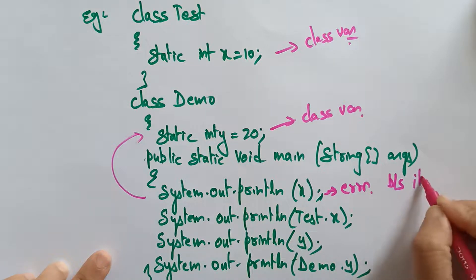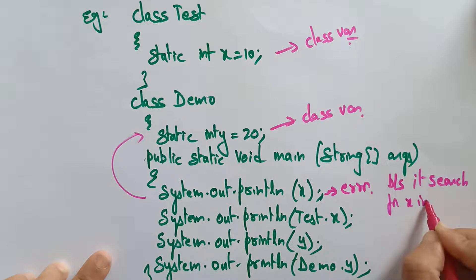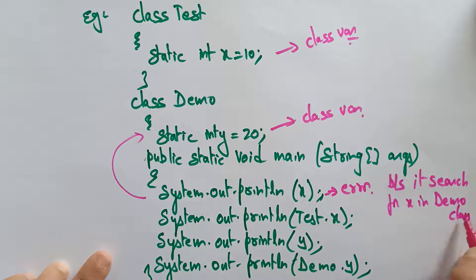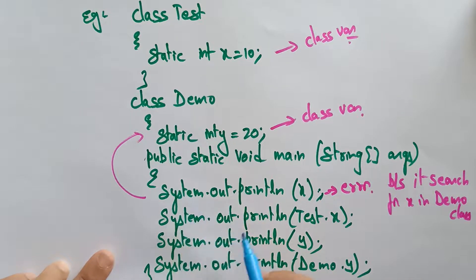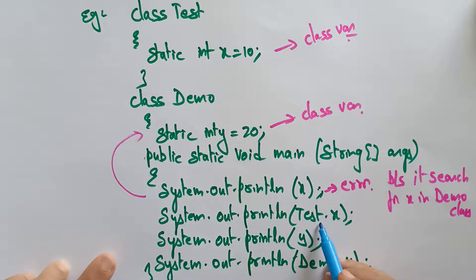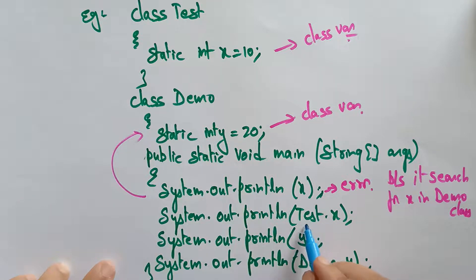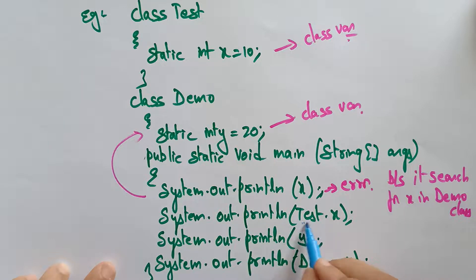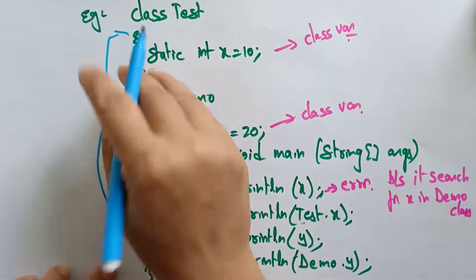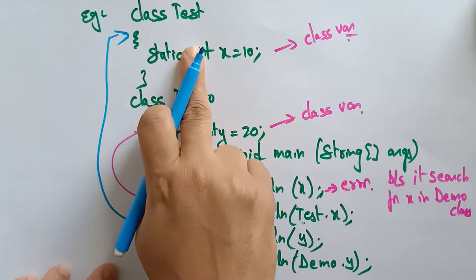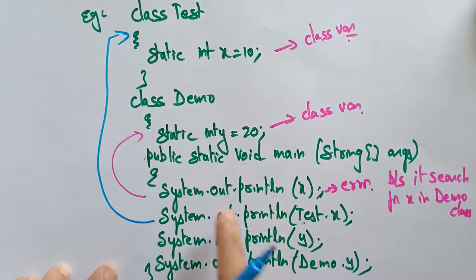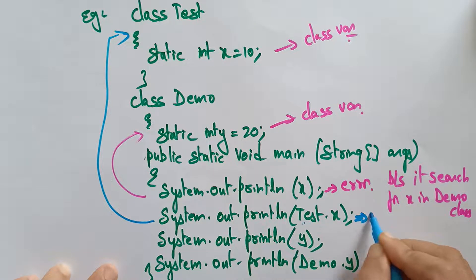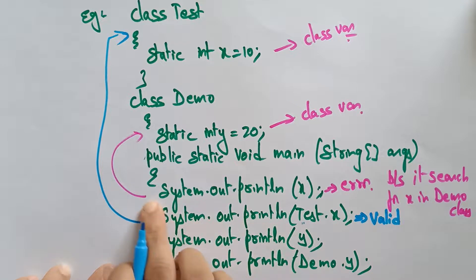Next: System.out.println(Test.x) — is this correct? Yes, it is correct. Even though x is not in Demo, we specify the class name 'Test'. So the controller goes to the Test class, finds x, and prints its value. This is accessing a class variable by using the class name.